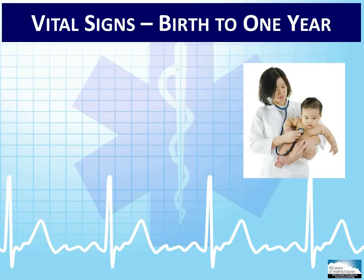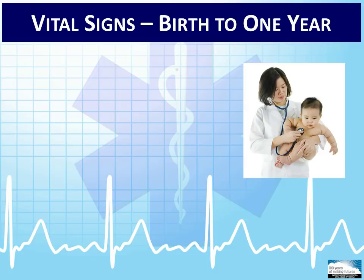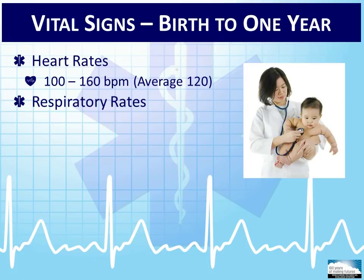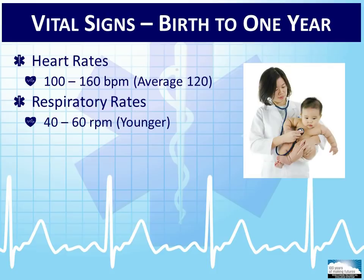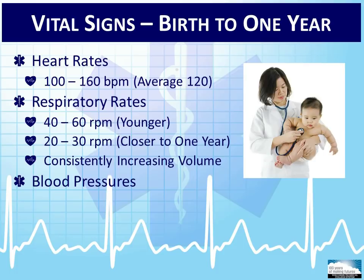Vital signs are important to obtain, but the identification of immediate life threats will routinely be made by assessing the child's appearance, work of breathing, and circulation to the skin — those three components comprise the PAT. Patients in this age range typically have heart rates of 100 to 160 beats per minute. From birth to a few months after, the number of breaths is usually around 40 to 60 times per minute, slowing as the child nears one year. Systolic pressures begin around 70 at birth and increase to about 90 at the age of one year.